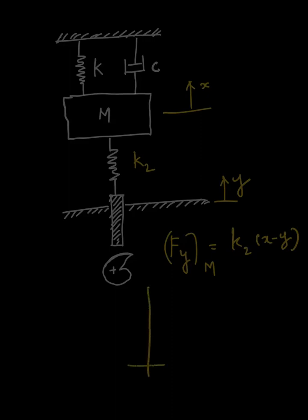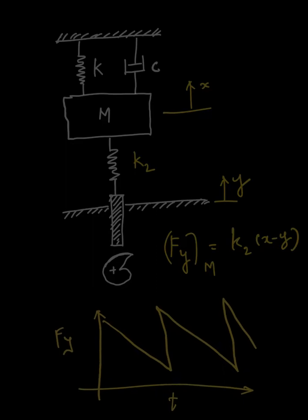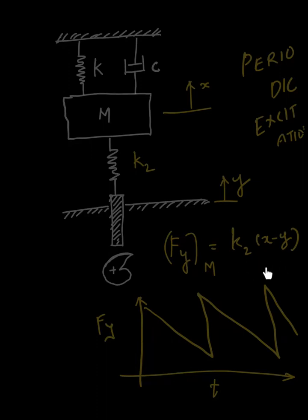The displacement y is controlled by the cam operation. If I plot the force Fy acting on the mass with respect to time, it will look something like this. This function is not harmonic, but there is a definite period associated with how the external force varies with time. These kinds of excitations are called periodic excitations. It is not an initial disturbance — it acts throughout the system's operation — but it is not directly proportional to sine or cosine. However, we can use the technique called Fourier series to convert any periodic function into an infinite sum of sines and cosines, and then tackle the problem.